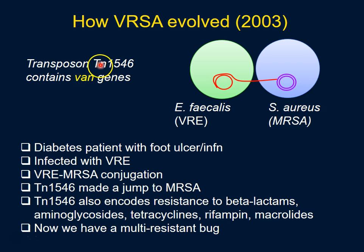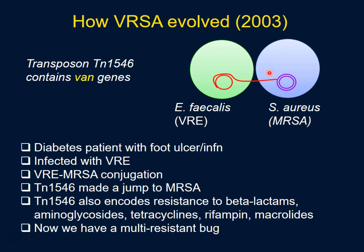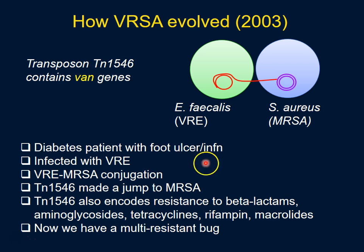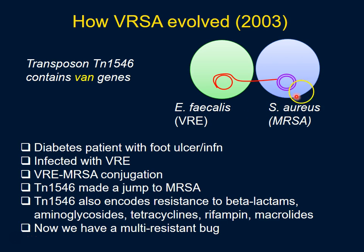That van gene cluster was carried within a transposon called TN1546, which was part of a conjugative plasmid that transferred from E. faecalis to Staphylococcus aureus. The S. aureus was already MRSA, and after acquiring this transposon it also became VRSA. TN1546 also carries resistance genes against most beta-lactams, aminoglycosides, tetracyclines, rifampin, and macrolides — creating a strain of Staphylococcus aureus with super-resistance to most drugs, including vancomycin.